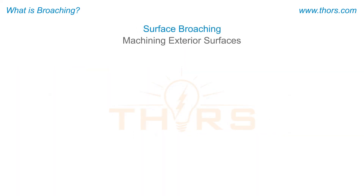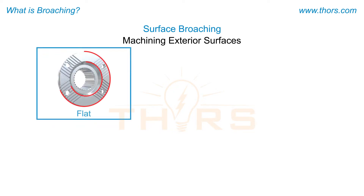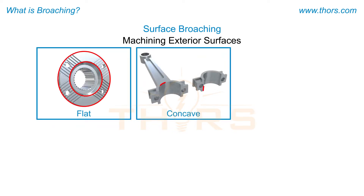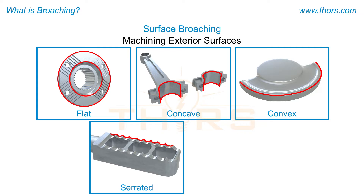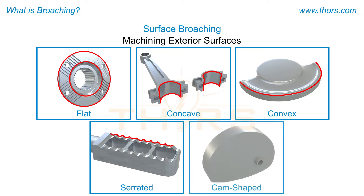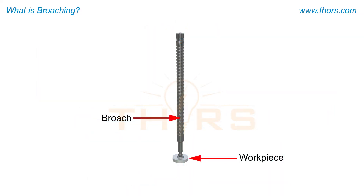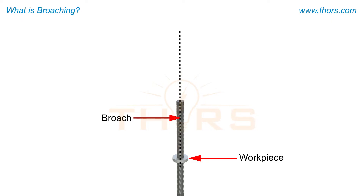Surface broaching is used for machining exterior surfaces such as flat, concave, convex, serrated, or cam shaped profiles. Both of these broaching operations are performed in a path parallel to the axis of the broach.